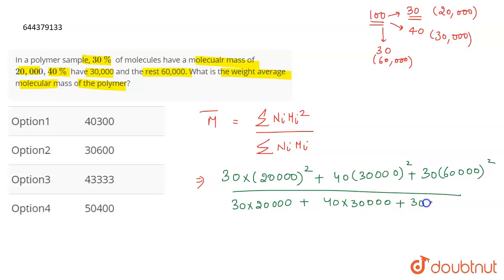So when you solve this, this will come out to be around 43,333.33. This will be the average molecular mass, and the closest answer is option number 3, so option 3 will be the correct answer.